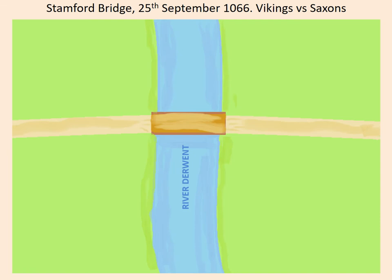The map isn't brilliantly drawn, but it gives you the main features. The battlefield at Stamford Bridge had the River Derwent running through the middle of it. This map is not actually aligned east-west or north-south — it's aligned in such a way that it's really clear who's on which side. But roughly speaking, the left-hand side would be the west bank, and the right-hand side would be the east.